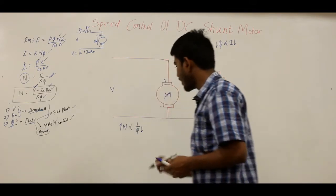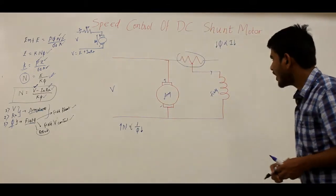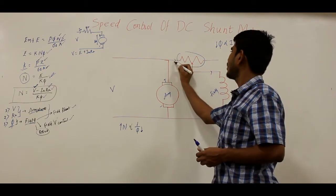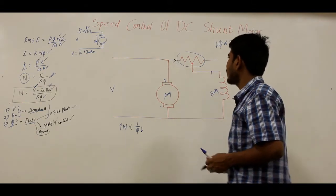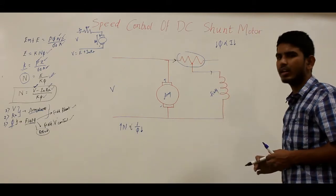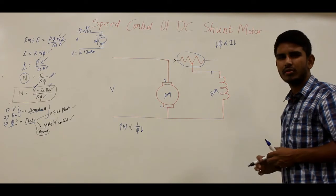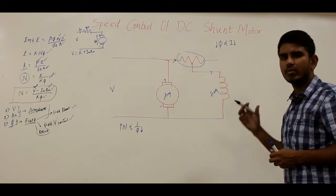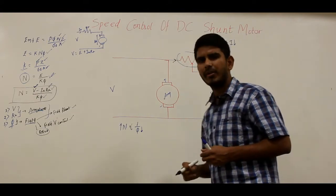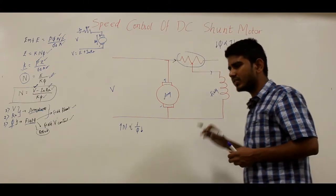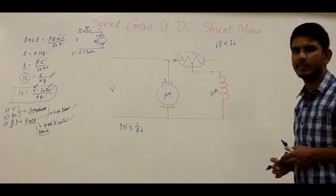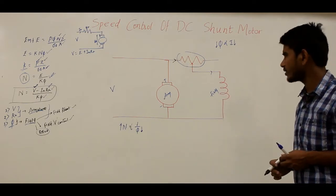By reducing the flux Φ, the motor speed increases. Only a very small current flows through the field rheostat, so the power wasted is not too serious. This method is very simple, cheap, and economical, and generally finds wide acceptance for speed control in DC motors.